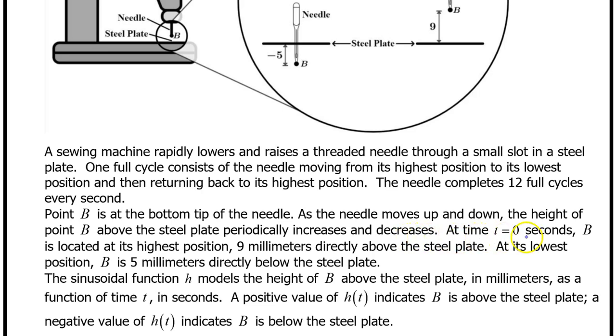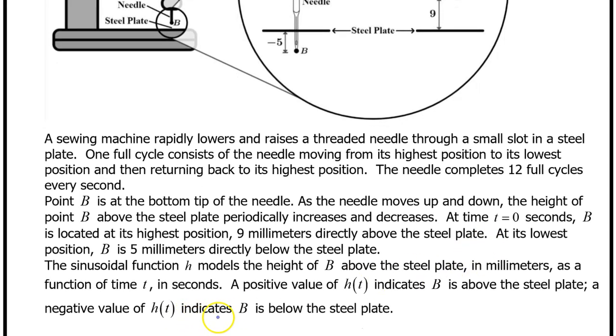At time t equals zero seconds, B is located at its highest position, 9 mm directly above the steel plate. At its lowest position, B is 5 mm directly below the steel plate. The sinusoidal function h models the height of B above the steel plate in millimeters as a function of time t in seconds. A positive value of h(t) indicates B is above the steel plate. A negative value of h(t) indicates B is below the steel plate.